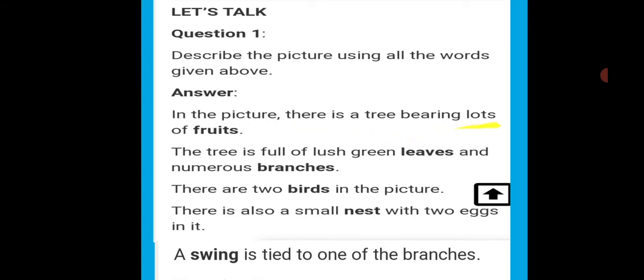In the picture, there is a tree bearing lots of fruits. Bearing means it is having lots of fruits. Number two.